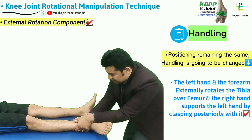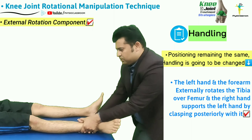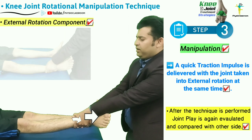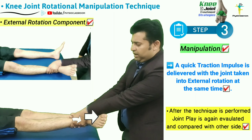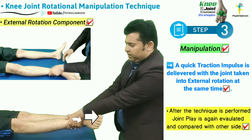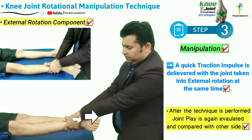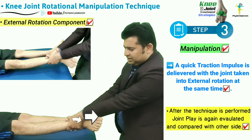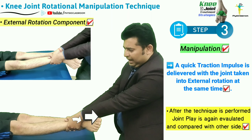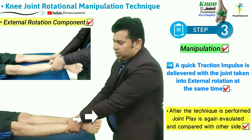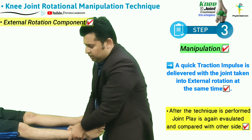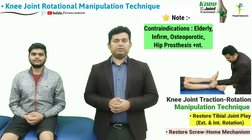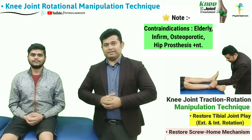With the tibia rotated externally, the therapist keeps the spine straight, tractions the knee joint while maintaining external tibial rotation, and then without loosening the tension, adds a quick impulse in external rotation with further traction to manipulate the knee joint.